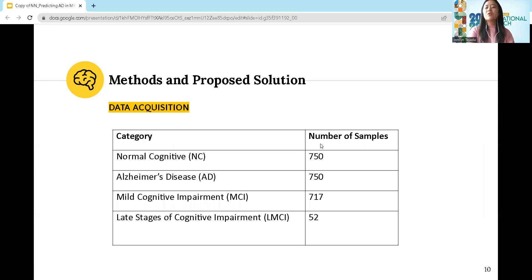The datasets used in this study consist of around 2,269 MRI scans divided into four categories: normal cognitive (NC), early stages of Alzheimer's disease (AD), mild cognitive impairment, and late stages of cognitive impairment. The table shown is the distribution of the number of samples used in the study.